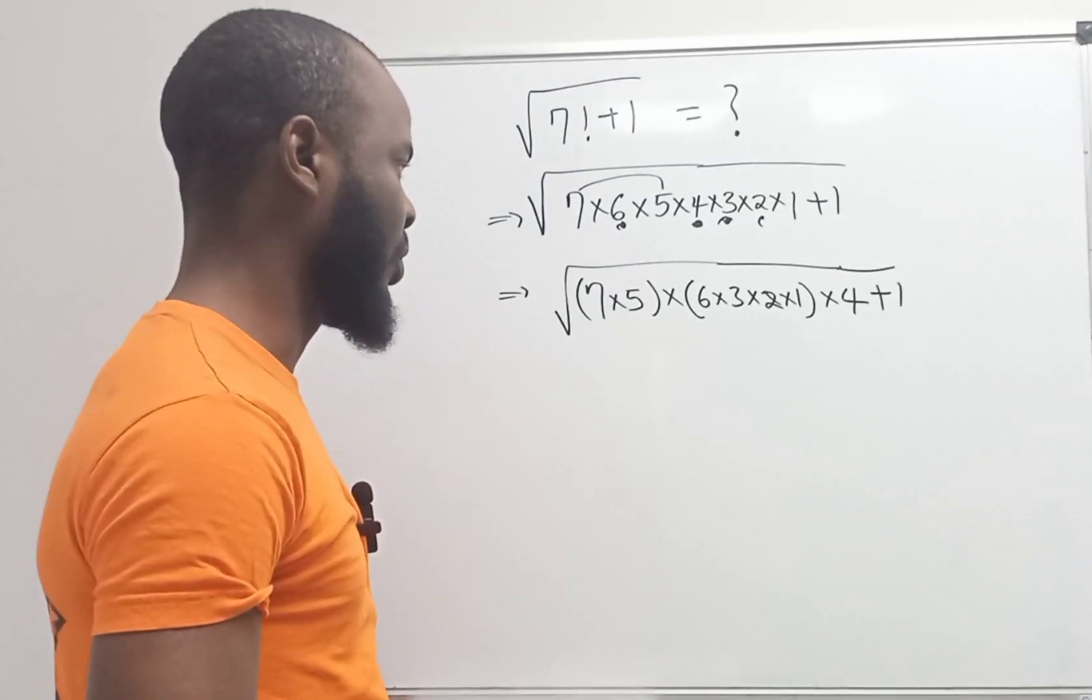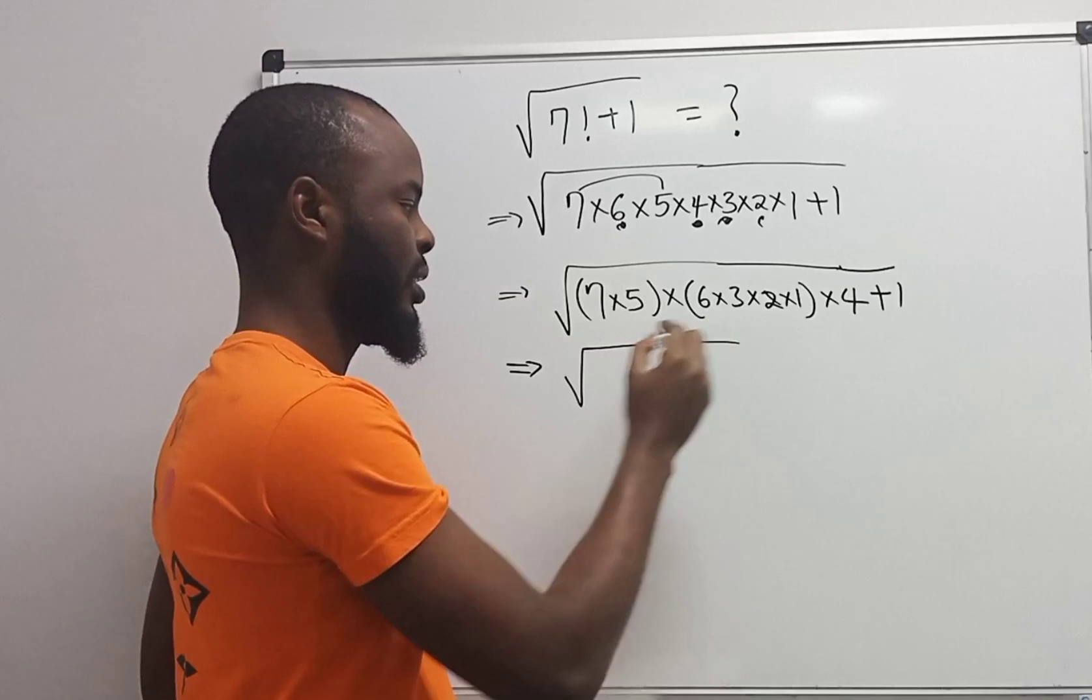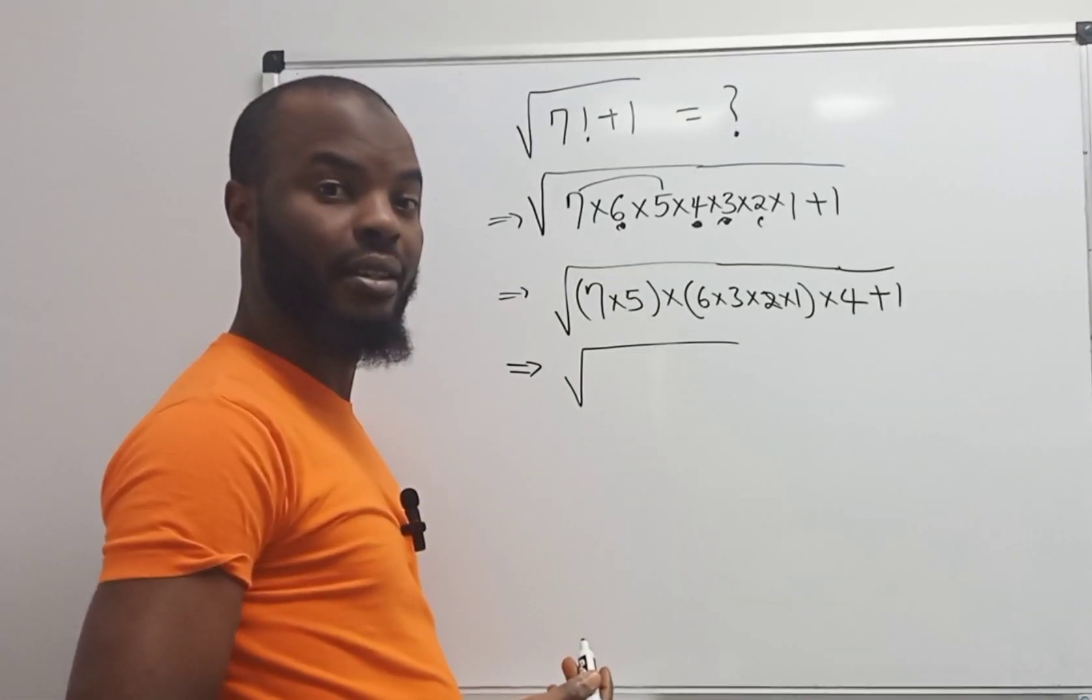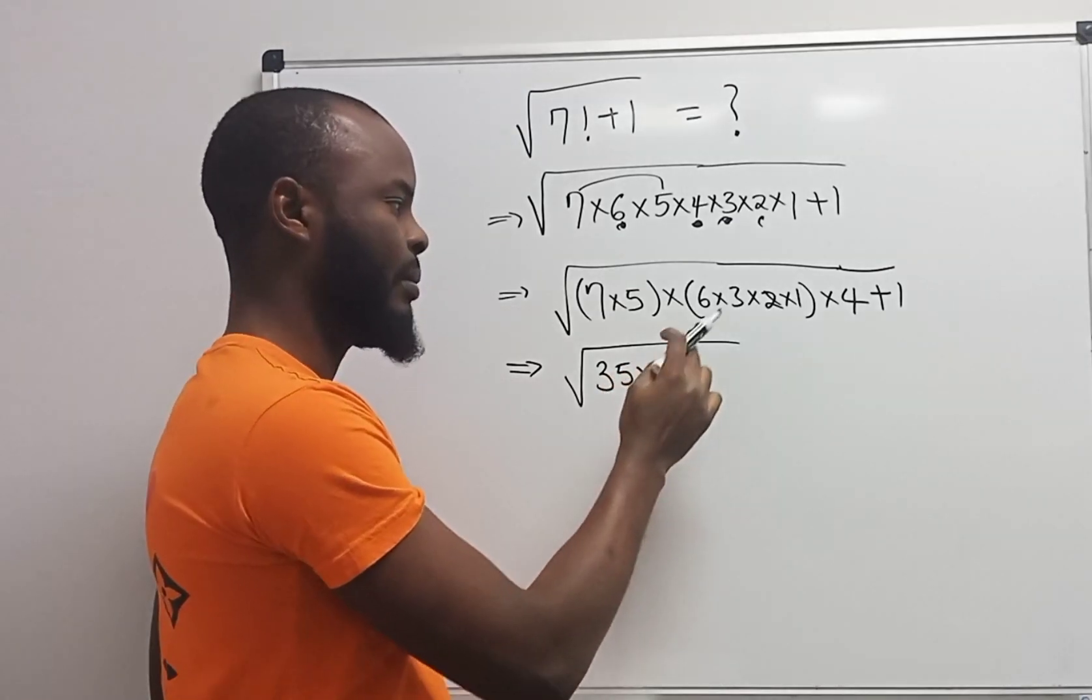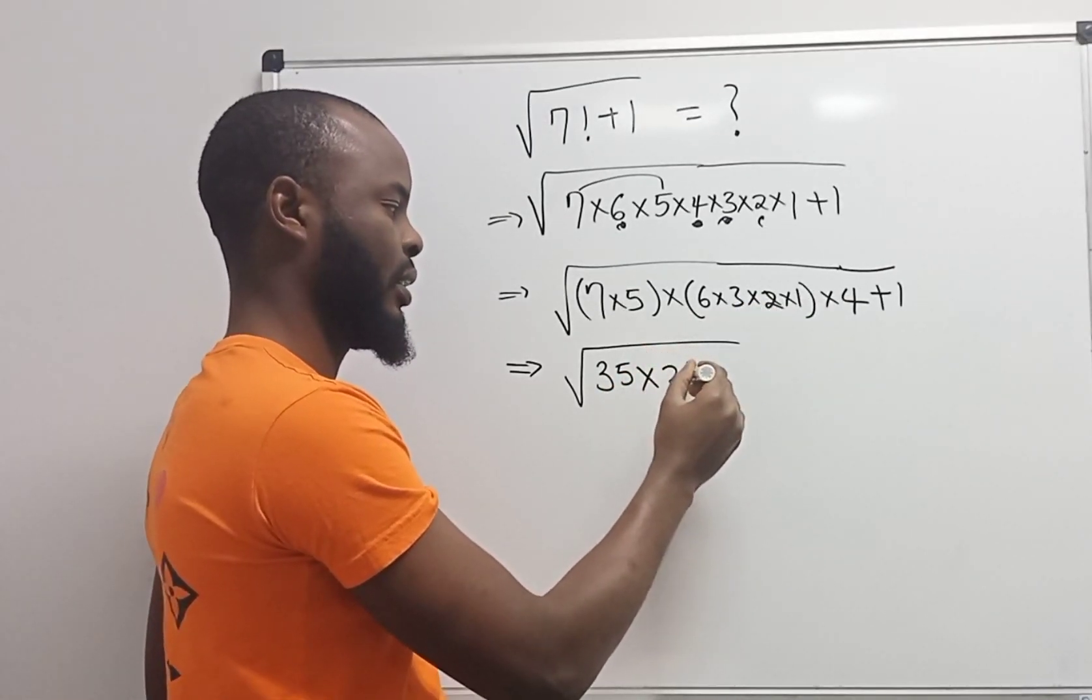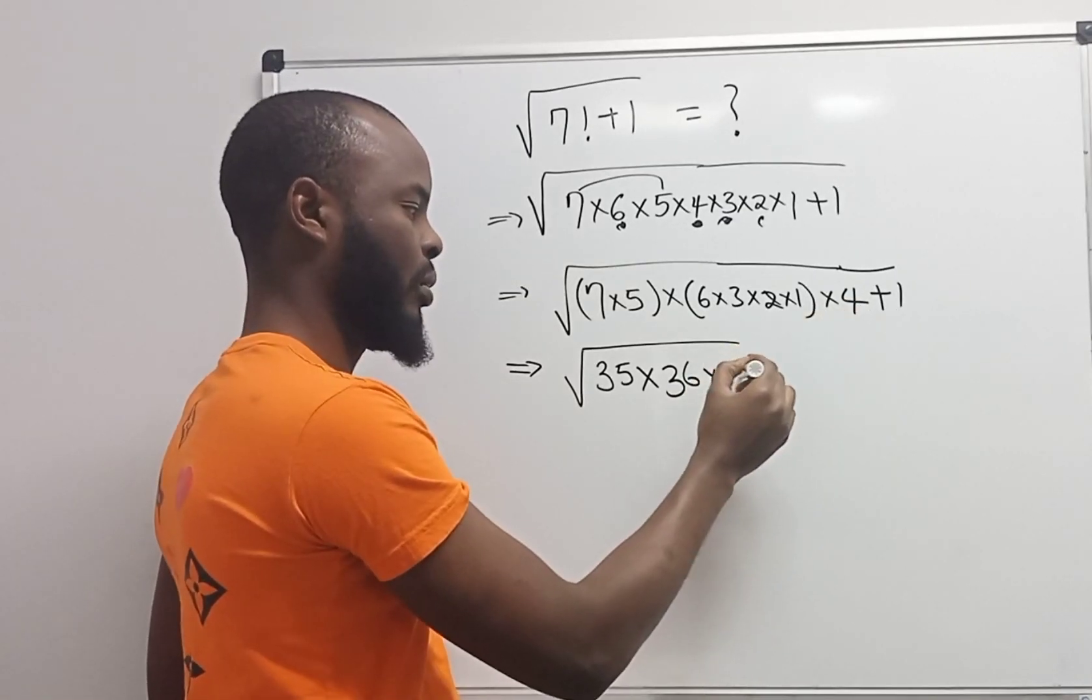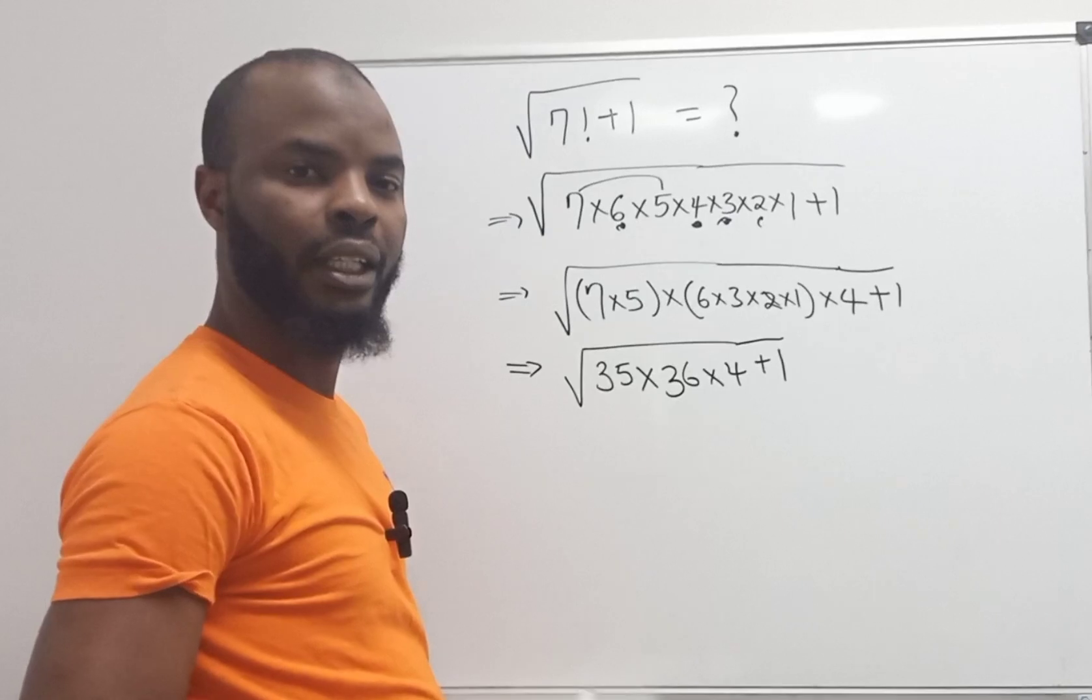Now here I have 7 times 5 is the same thing as 35, multiply by 6 times 3 times 2 times 1 is 36, multiply by 4, plus 1. Now let's do this.